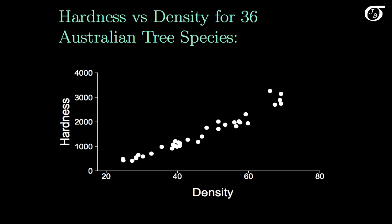Let's look at an example here. This is hardness versus density for 36 Australian tree species. Hardness is the Janka hardness. It's a measure of the durability of the wood, and it's a hard to measure variable. And down here we have density, and density is an easy to measure variable.